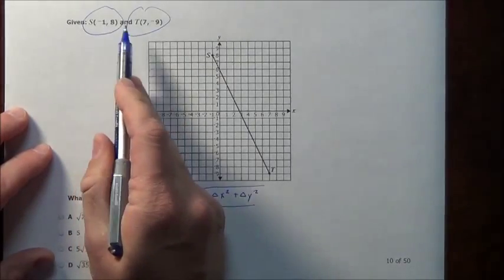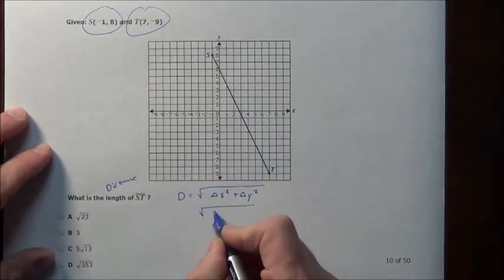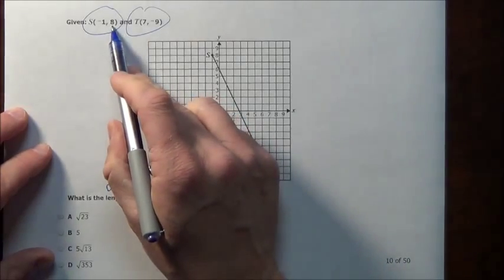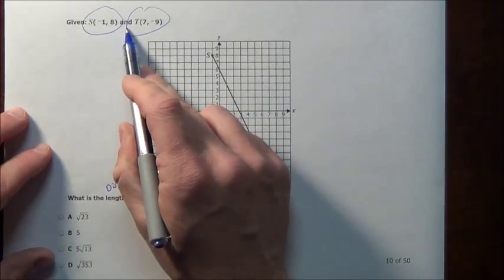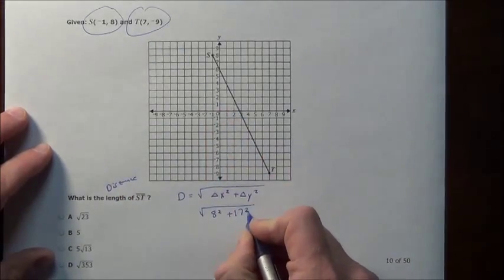Well from negative 1 to 7, that's a difference of 8. So I know that's going to be 8 squared plus the change in y is 8 to negative 9. Well 8 to 0 is 8, 0 to negative 9 is 9, that's 17 squared.